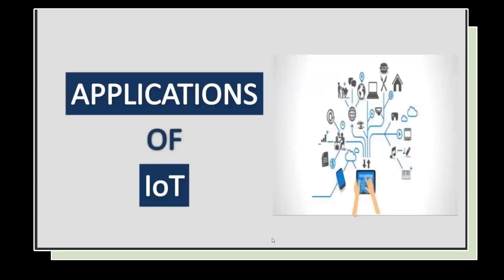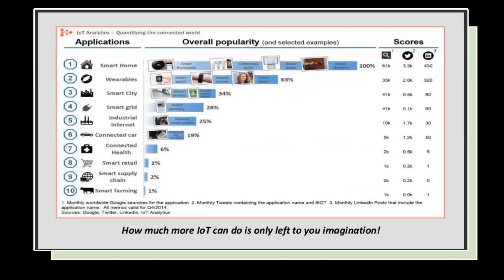The major applications of IoT are smart homes, wearables, and smart cities. These three are the primary applications of IoT, with smart farming also among the applications.